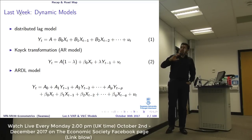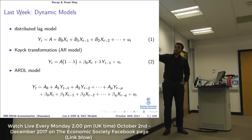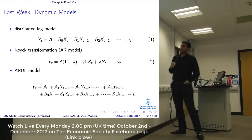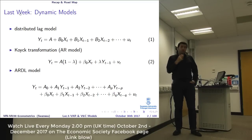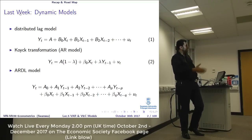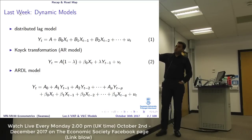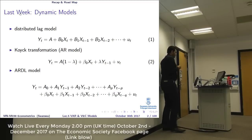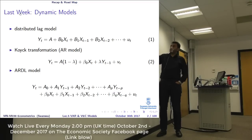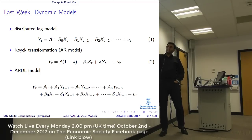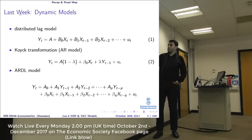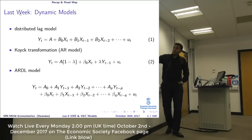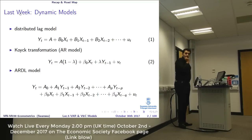We looked at dynamic models, in particular the distributed lag model. We started with the permanent income hypothesis of Milton Friedman and explained how economic theory looks at the equilibrium point, but there is a process until we reach equilibrium. We showed the general form of the distributed lag model — an infinite lag model — and then how a Koyck transformation converts it into an autoregressive model with only three parameters, combining both into the ARDL model.